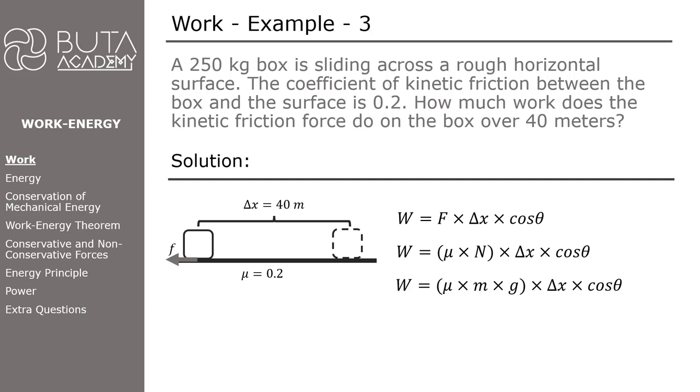Except for the angle theta, we have all the values required to determine the work done. Theta, as we already know, is the angle between the force and displacement. The displacement of the object on this diagram is to the right, meanwhile the friction force acts in the opposite direction. There is a 180-degree angle between these two.